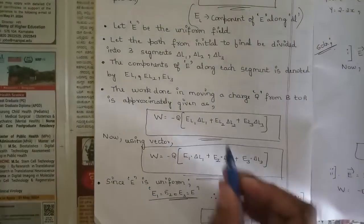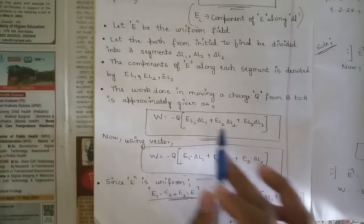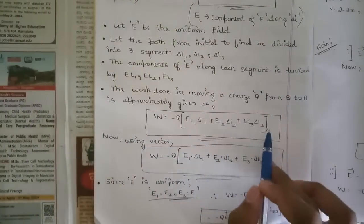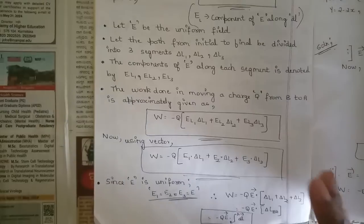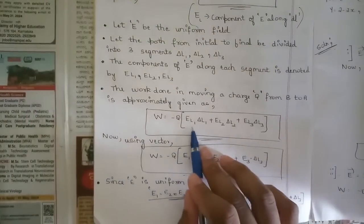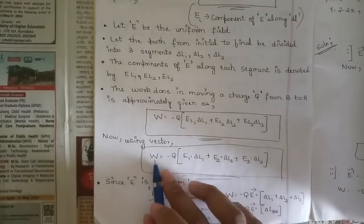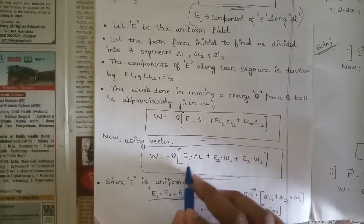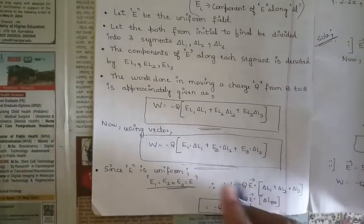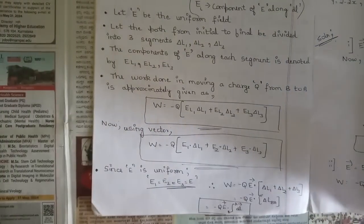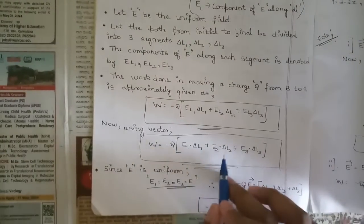W = -Q × (E_L1·Δl1 + E_L2·Δl2 + E_L3·Δl3). Using vector dot product notation, we replace E_L1 with E⃗1, so it becomes W = -Q × (E⃗1·Δl⃗1 + E⃗2·Δl⃗2 + E⃗3·Δl⃗3).